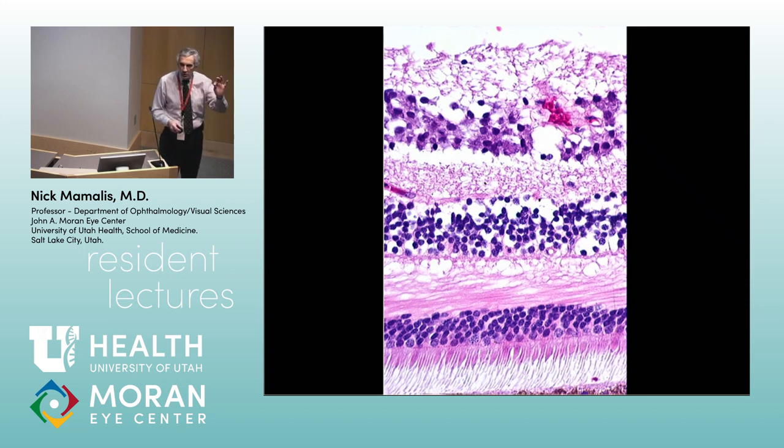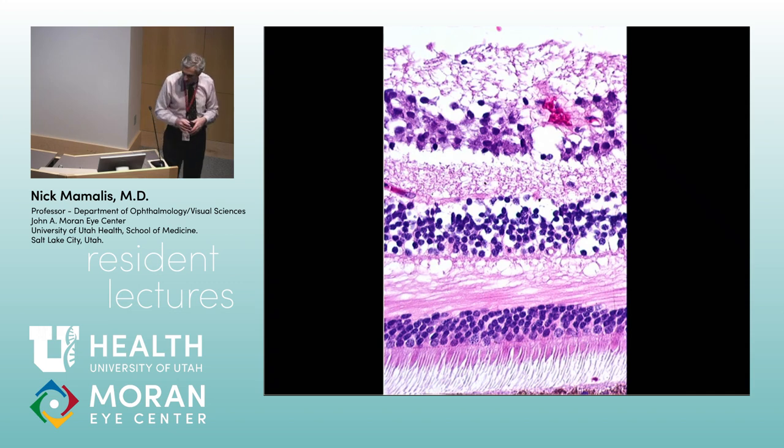The outer limiting membrane is not actually a membrane — it's little junctions. When you look at them in light microscopy it almost looks like a membrane, but it's the tiny junctions in the inner segments of the cells right there that form those little dots that look like a membrane.